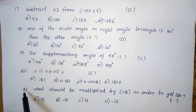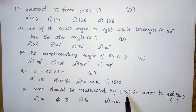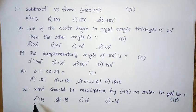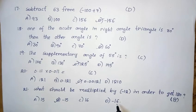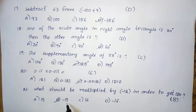Twenty-first question: What should be multiplied by minus 12 in order to get 180? Option A: 15. Option B: minus 15. Option C: 16. Option D: minus 16. The right answer is option B — minus 15.